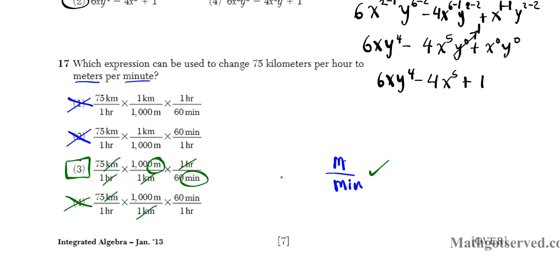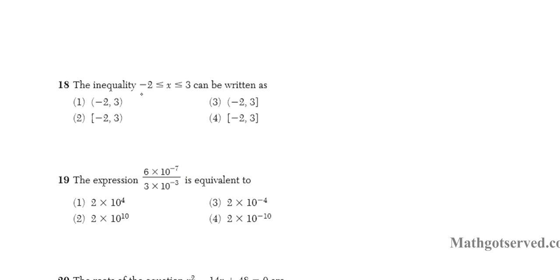Let's move on to question 18. It says the inequality -2 ≤ x ≤ 3 can be written as. Now one thing I need you to remember is that this line under the inequality symbol represents inclusion. So when you have a parenthesis like this, this is less than. And if you have a bracket, this bracket means inclusion. So this is less than or equal. So you got to keep that in mind. And also in the other orientation, likewise if you have a bracket like this, it's greater than or equal to. And then a parenthesis is just simply a greater than symbol.